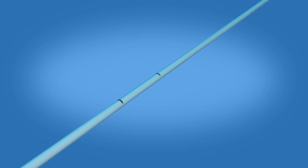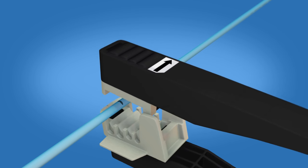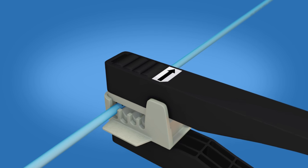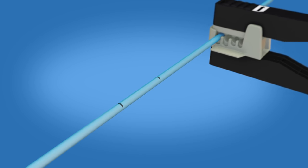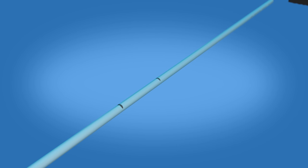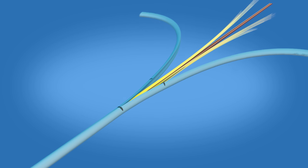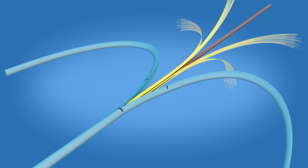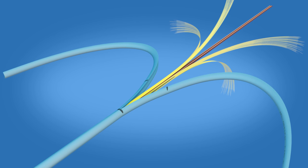Align the blade of the cord splitter tool with the slit jacket mark. Split the cable from the slit jacket mark to the end of the jacket using the cord splitter tool. Peel the jacket open to the slit jacket mark to expose the 250 micron fibers and aramid yarn.